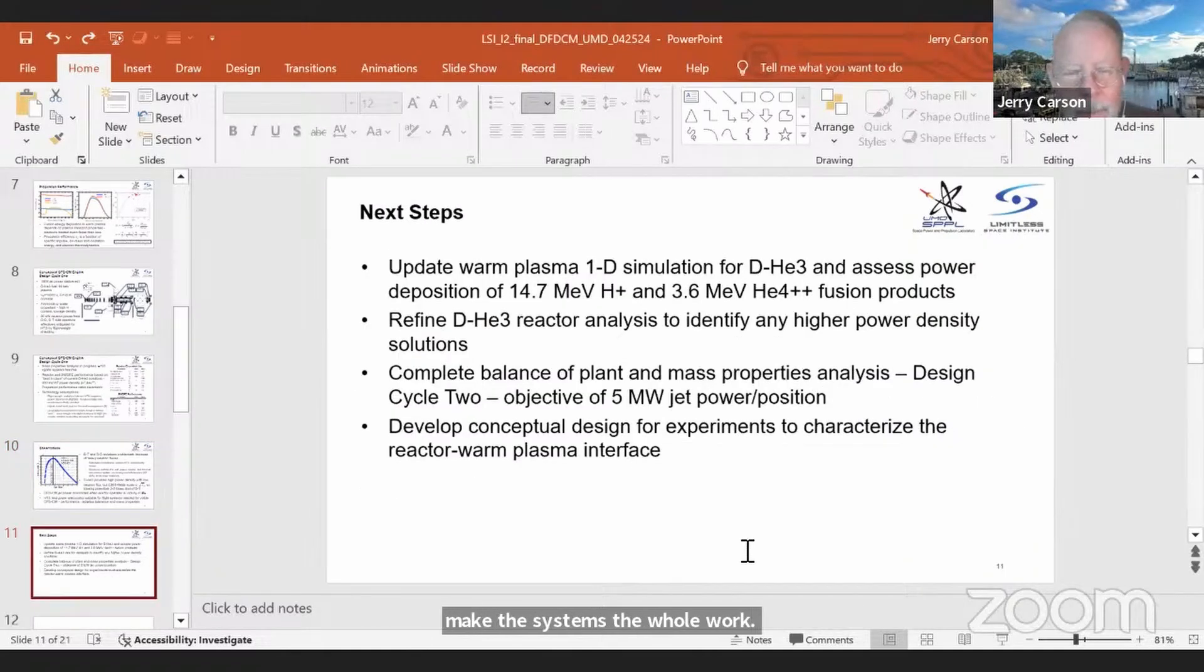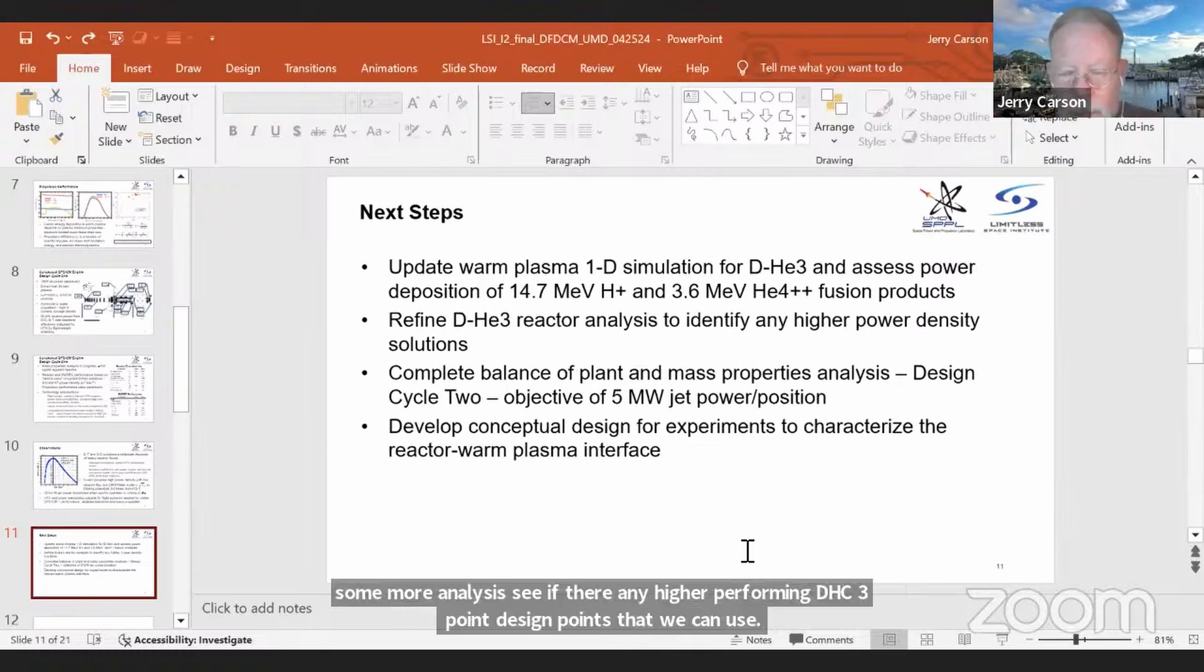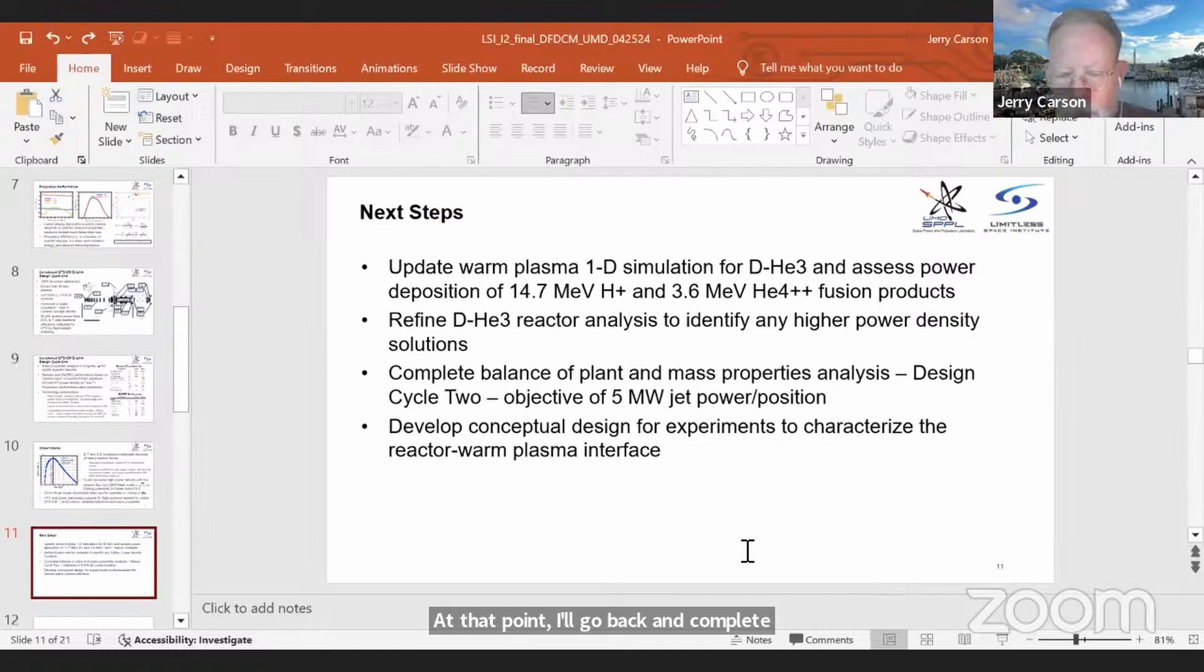So, next steps, the propulsion calculations this time around were parametric. I need to update the warm plasma 1D simulation to account for the deposition, and then characterize the deposition of these, you know, different types of high-energy species from the reactor. Do some more analysis to see if there are any higher-performing DHE3 design points that we can use. At that point, I'll go back and complete the balance of plant design with a cycle 2 and, you know, try to get to a 5-megawatt jet-powered position type of system. And then the final part of the task is to develop a conceptual design for experiments to characterize the reactor in warm plasma interface. We've made a fair number of assumptions about what the interface looks like, and we have some analytic approaches we can do to do that. But we're also going to try to do some experiments possibly based off of CMFX reuse to evaluate that experimentally.